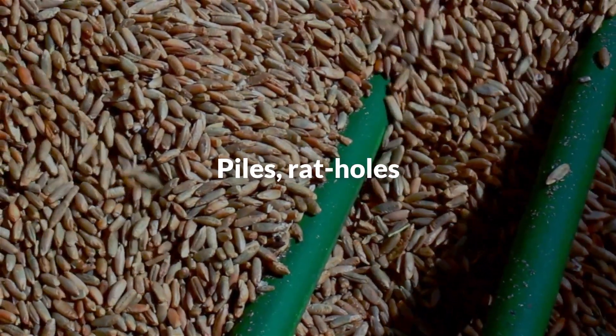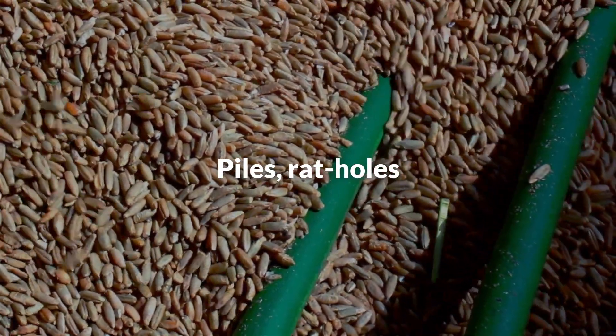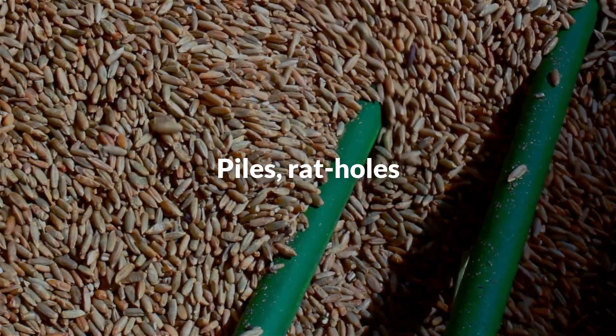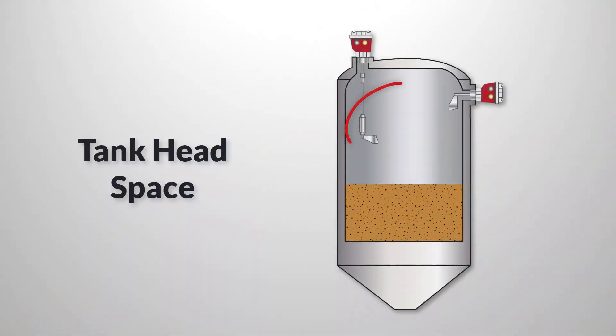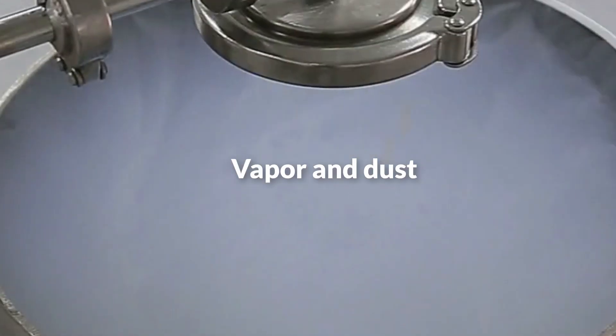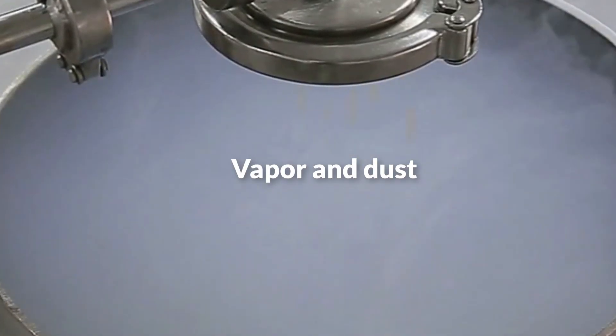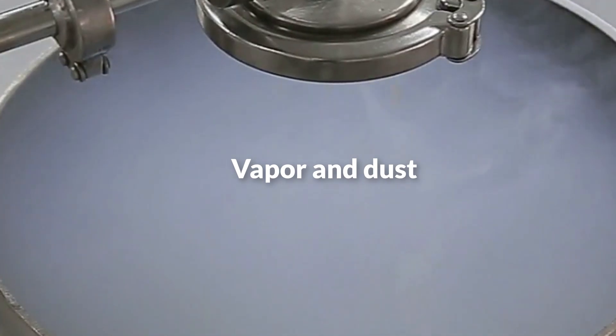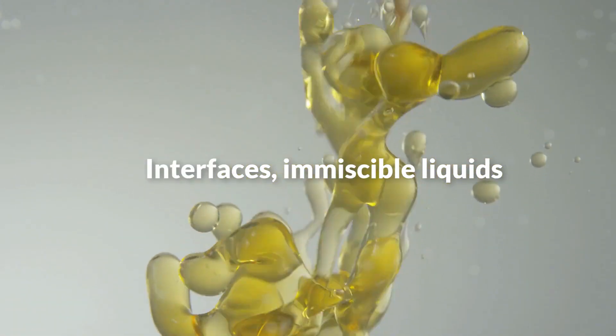If the solids in a silo tend to pile up in one place or form a rat hole, there may be no true level to detect. A tank headspace, the space above the material, may contain vapors or dusts that obscure the view of the surface, and sometimes the level of interest is actually an interface between two immiscible liquids.